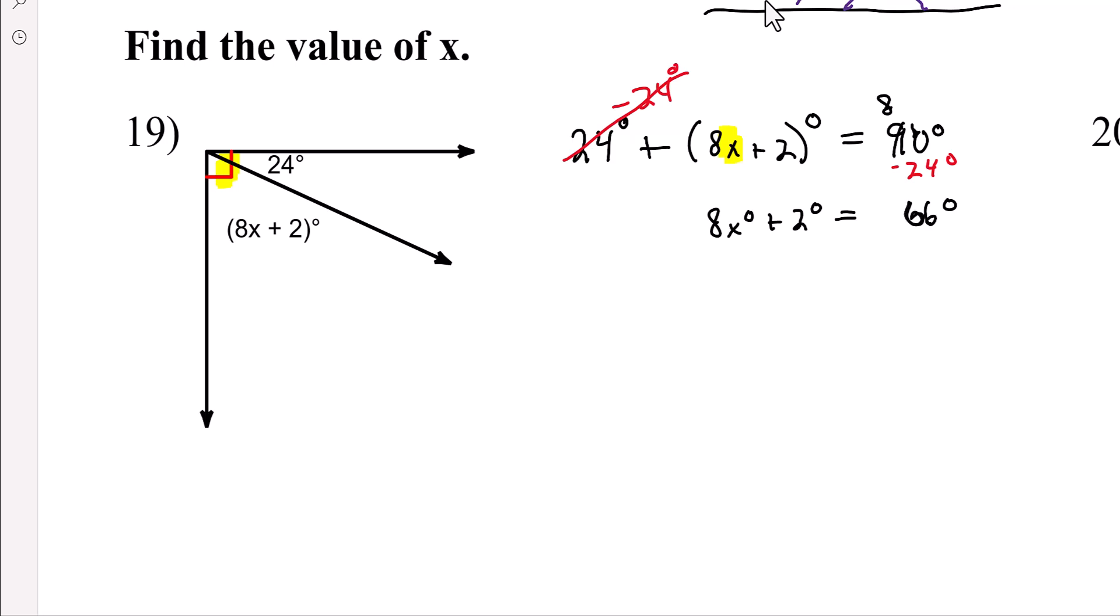And then we're going to subtract 66 degrees. See, that's how math teachers make those mistakes all the time too. Alright, so now we have something that's touching by multiplication, something that's adding. It's the reverse order, so you're going to subtract the 2 degrees.